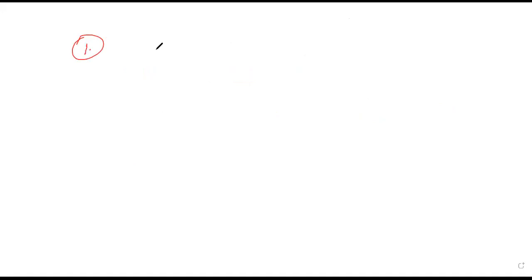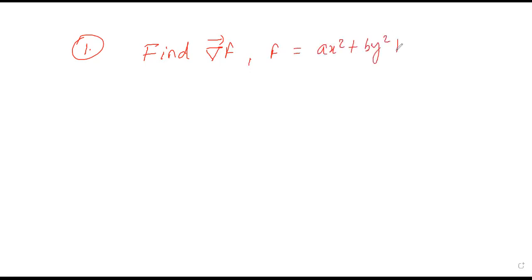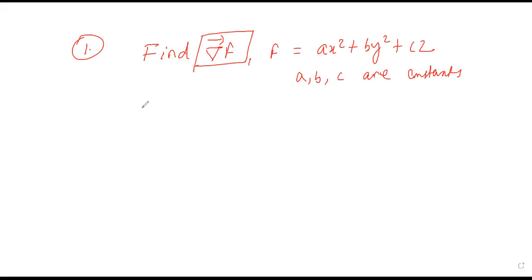The first question is: find ∇f, where f is given by f = ax² + by² + cz, where a, b, c are constants. We need to find ∇f.